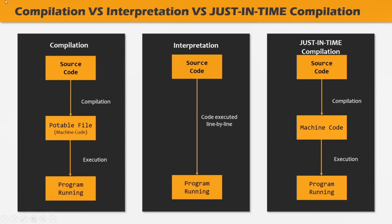The difference between compilation and just-in-time compilation is that in the compilation process, the source code gets compiled to machine code and stored in a portable file which can be executed at any later point of time. But in just-in-time compilation, the entire source code is converted into machine code at once, but that machine code will not be saved in any portable file — instead, it will be executed immediately. This is a very high-level overview of what a compiler, interpreter, and just-in-time compiler are, and this is all you need to know for now.